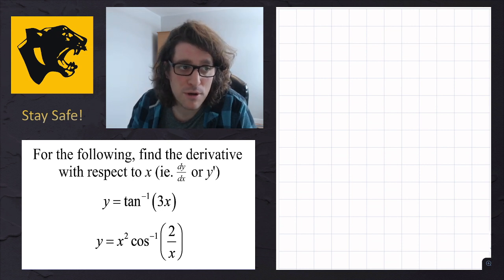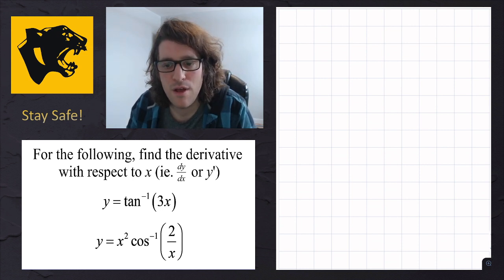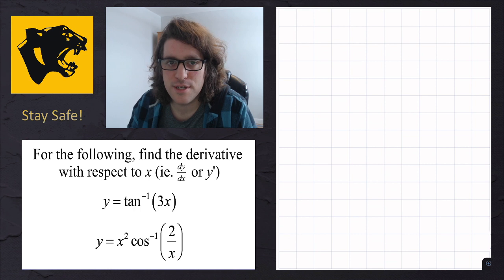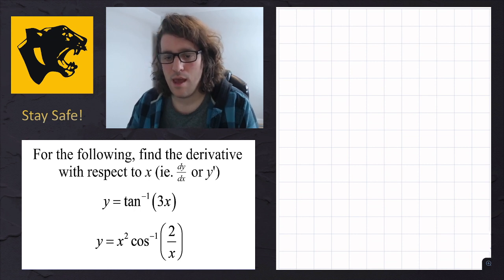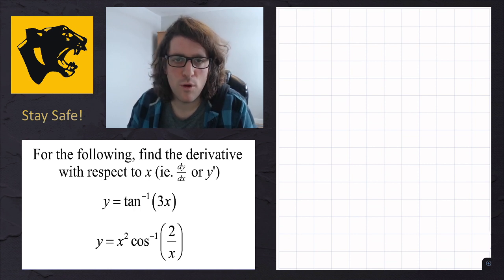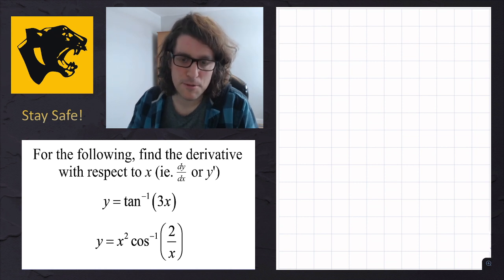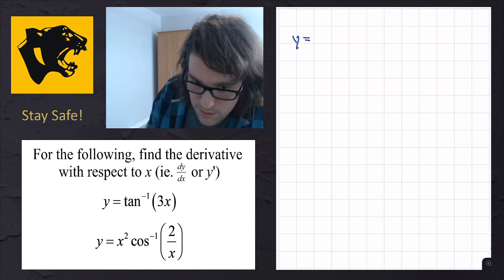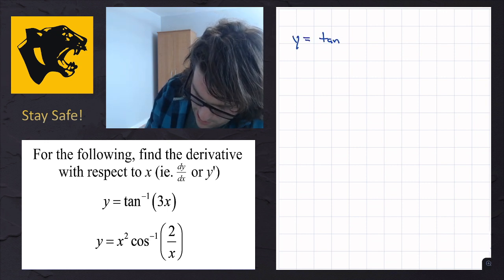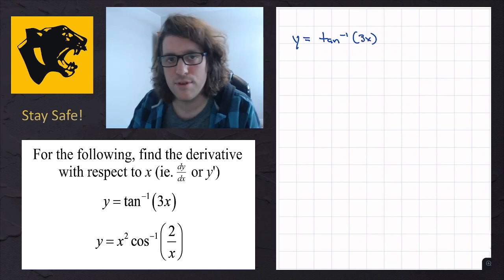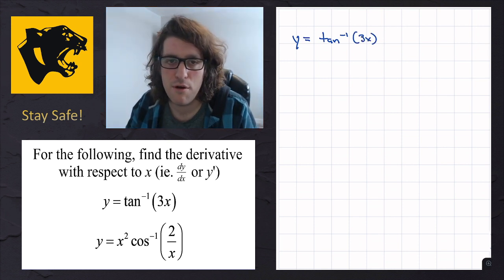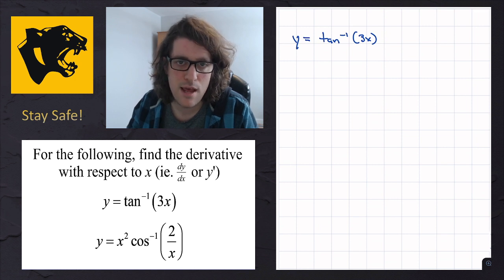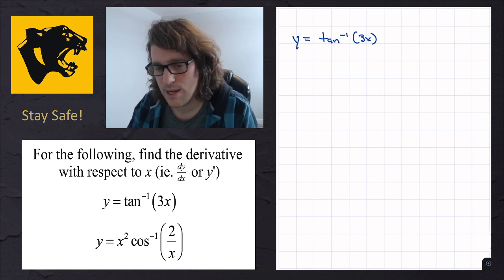The last thing we were covering was the inverse trig derivative. We had done derivations in class for all six of them. Now I'm going to do some questions that involve using these inverse trig derivatives. The first one is pretty straightforward — we're going to take the function y equals the inverse tan of 3x. This is a chain rule question: the outer function is inverse tan and the inner function is 3x.